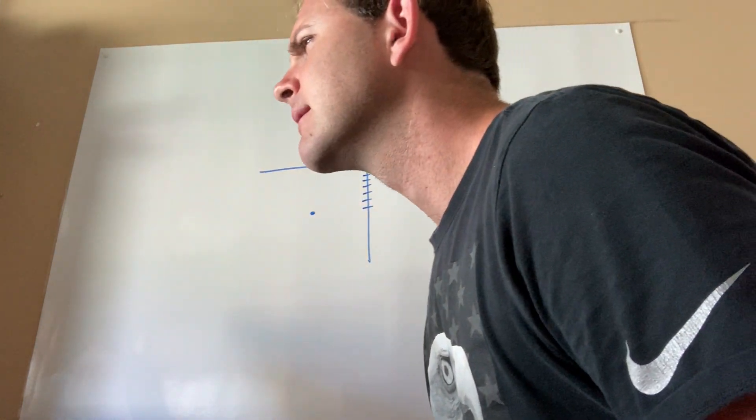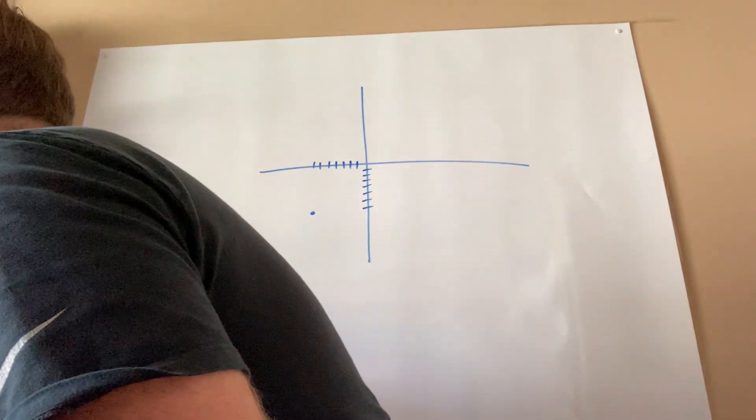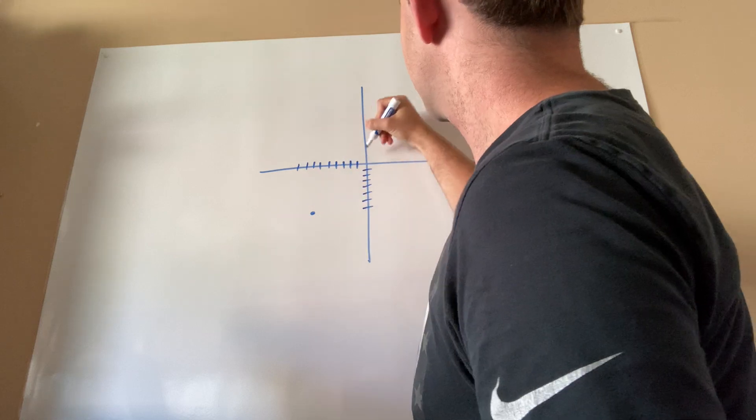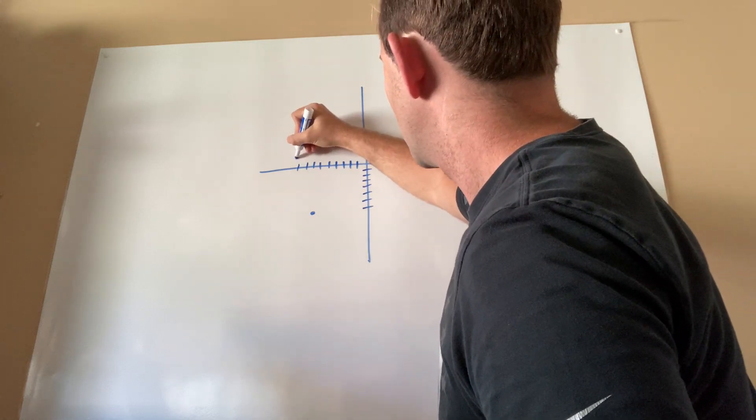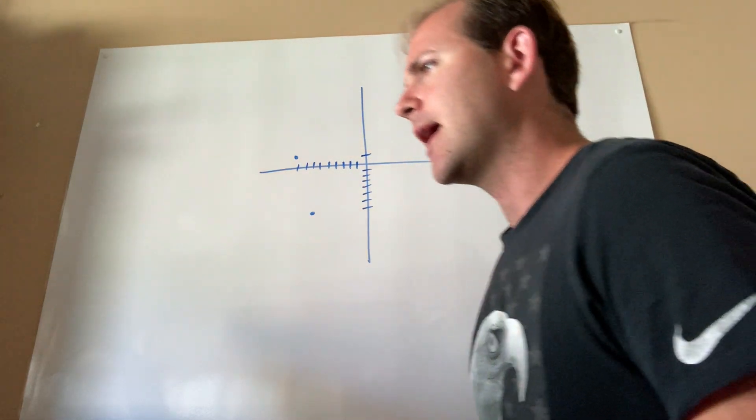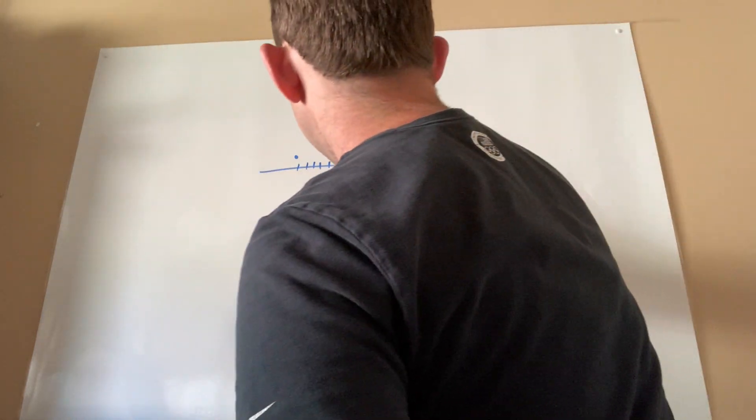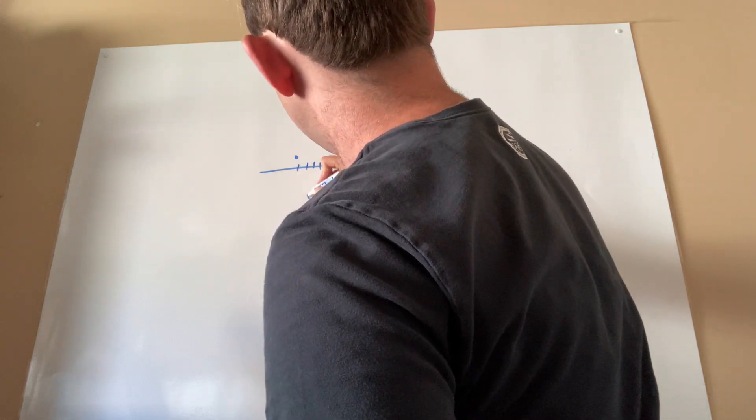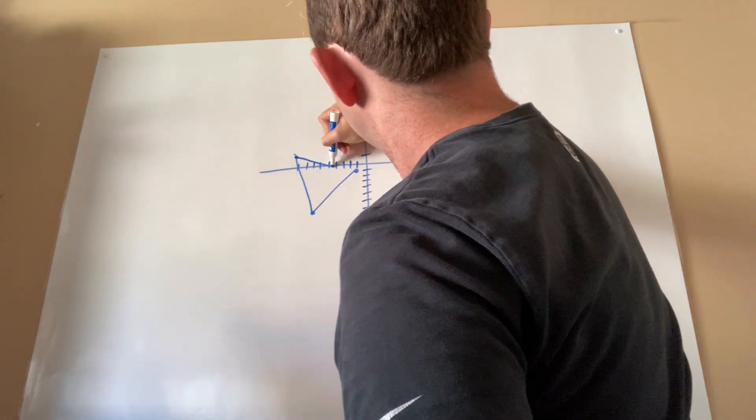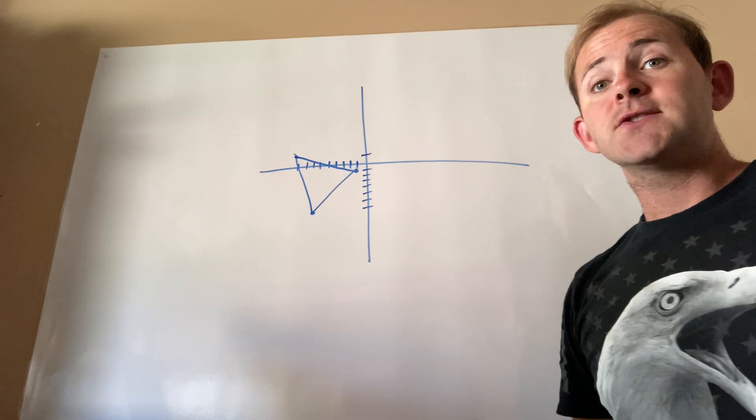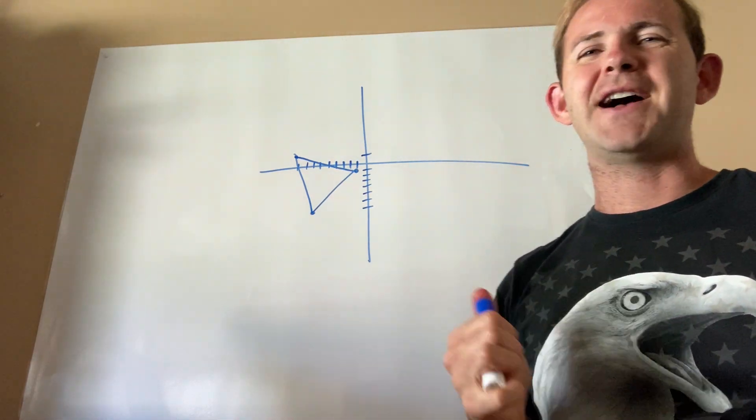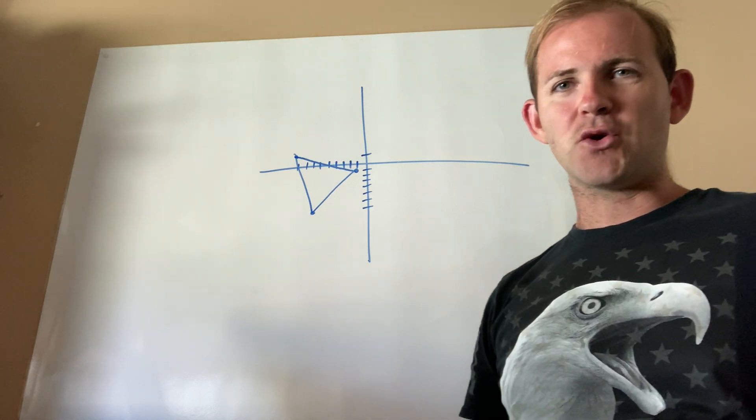Then we've got, what does that say? Is that negative 9 comma 1? I think so. So negative 9 comma 1 and then negative 1, negative 1, which is right here. All right, cool.